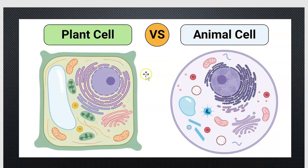Looking at the shapes of these cells you can see that the plant cell has this nice rigid sort of rectangle thing going on whereas an animal cell is more of a circular sort of blob-ish shape.